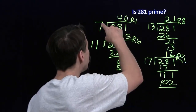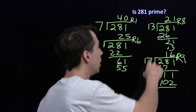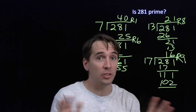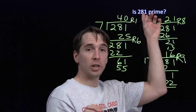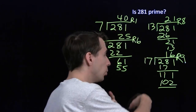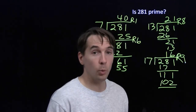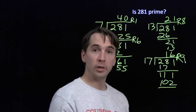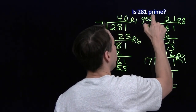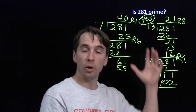So all we have to do is test primes, keep dividing them into the number, until the quotient is less than the prime we're dividing by. As soon as we reach that point without finding any divisors, we're done — we won't find any divisors besides 1 and the number itself. So 281 is prime. And now we have a method to test whether or not a number is prime.